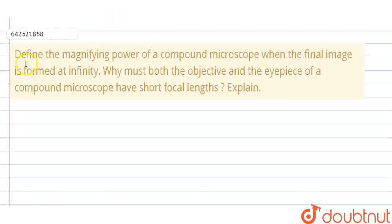Hello everyone, let's start with the question. The question says: define the magnifying power of a compound microscope when the final image is formed at infinity. Why must both the objective and the eyepiece of a compound microscope have short focal lengths? Explain.